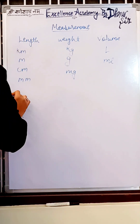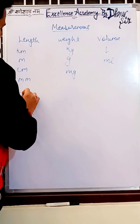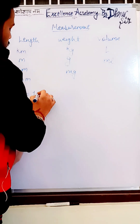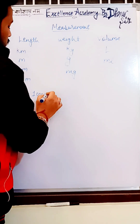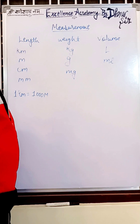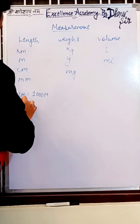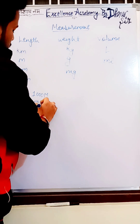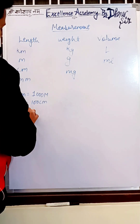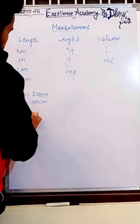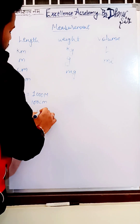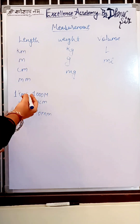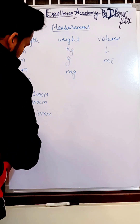Now let's talk about conversions. One kilometer is equal to how many meters? It is 1000 meters. One meter is equal to how many centimeters? 100 centimeters. And one centimeter is equal to 10 millimeters. Now if I say you have to change one kilometer into millimeters.